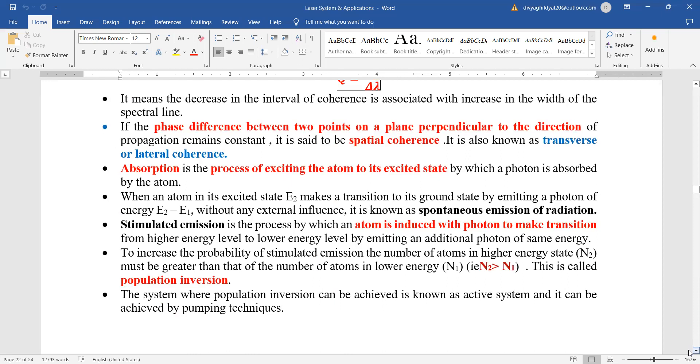Population inversion means the probability of making the number of atoms in higher energy state more or greater compared to the number of atoms in the lower energy state.